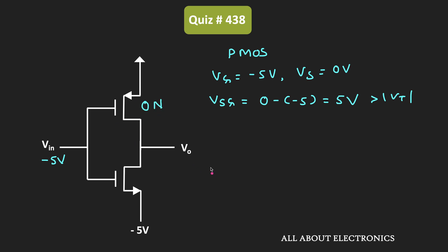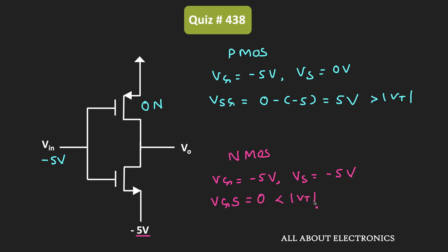For the NMOS transistor, VG is also equal to minus 5V, but the source is also connected to minus 5V, so VS is also equal to minus 5V. That means the gate-to-source voltage VGS is equal to 0. Since it is less than the threshold voltage, this NMOS transistor will remain in the OFF condition. Whenever Vin is equal to minus 5V, the PMOS will be ON and the NMOS will be OFF. Since the PMOS is ON it acts as a short circuit, and the output voltage will be very close to 0V.